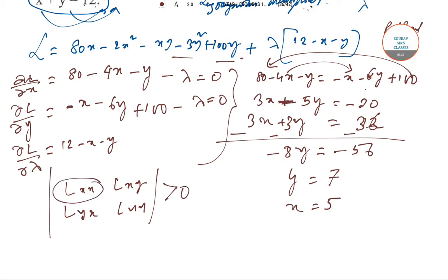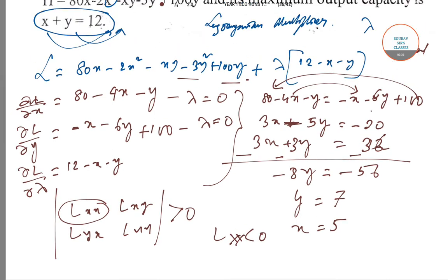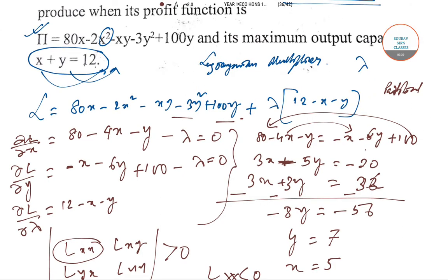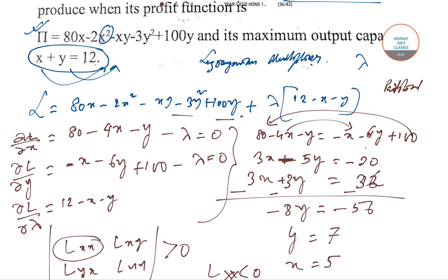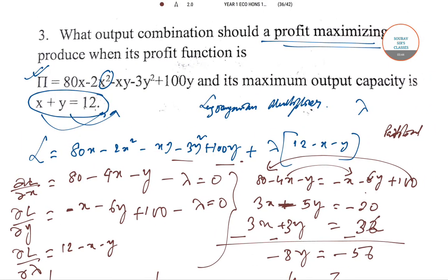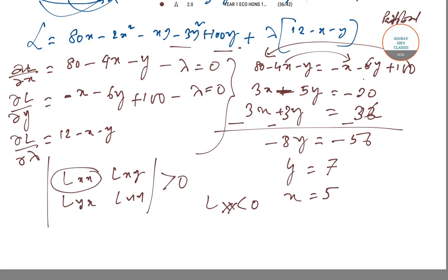You can check the second order condition using Lxx, Lxy, Lyx, and Lyy. The determinant should be positive and Lxx negative to confirm maximum profit. The answer is x equals 5, y equals 7. Remember, they asked for output combination, not maximum profit value - if they wanted maximum profit, you'd substitute these values into the profit function.